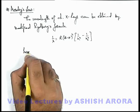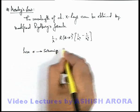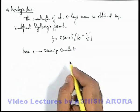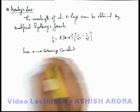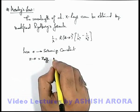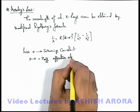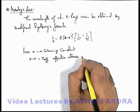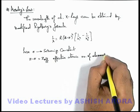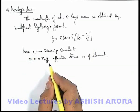Here, σ is the screening constant, which accounts for the shielding effect of the nucleus by the outer electrons. And (Z − σ) is written as Z-effective, called the effective atomic number of the element, which corresponds to a specific transition, because for different transitions the value of the screening constant will be different.